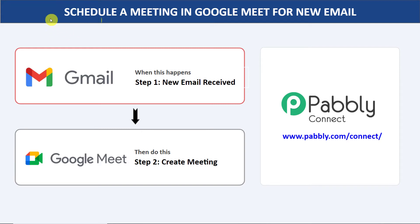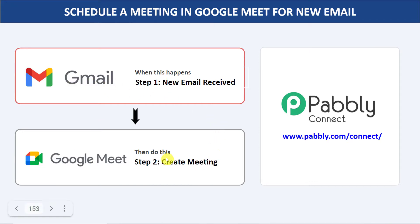Hello everyone. In this video, we will learn how to schedule a meeting in Google Meet for new emails automatically. The idea is that if someone sends an email to me, the same person will be automatically added as a guest in my Google meeting. The problem is there is no direct data flow between Gmail and Google Meet, so we have to bring a third app to properly connect them both. In this video, we will be using Pably Connect to integrate Gmail and Google Meet. The best part is there is no need for coding skills or programming knowledge.